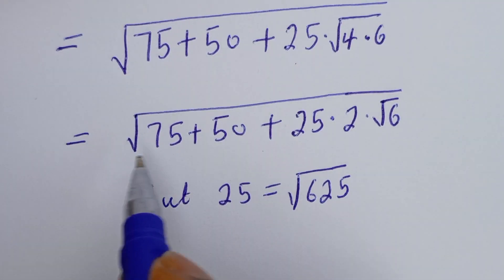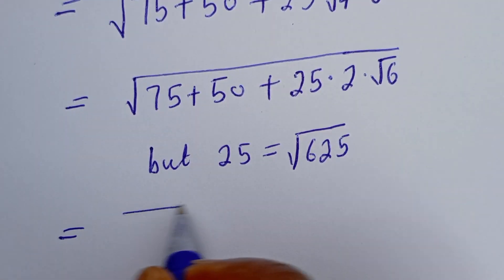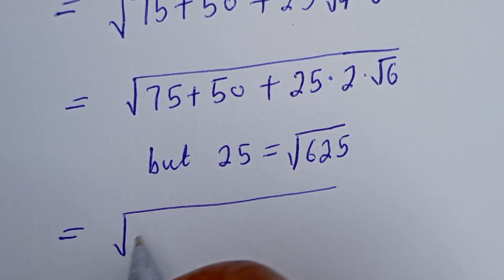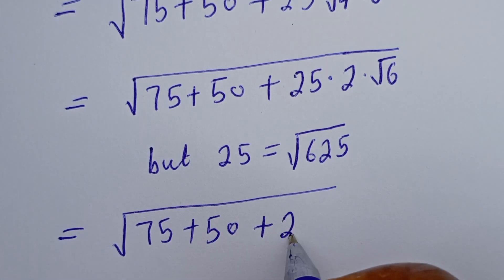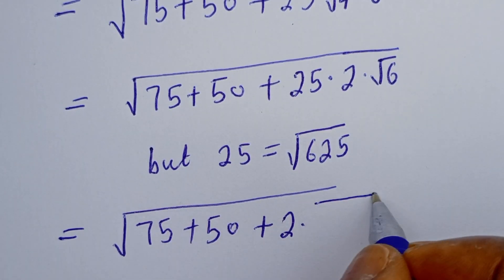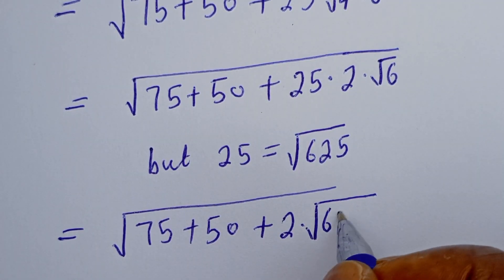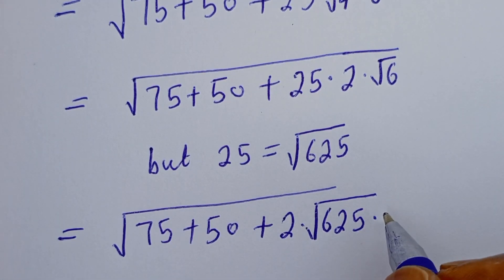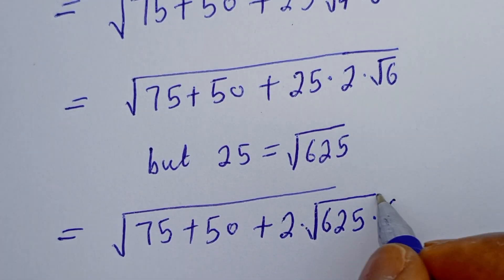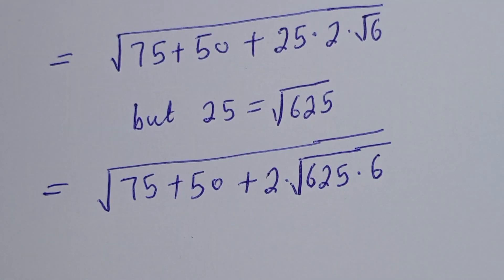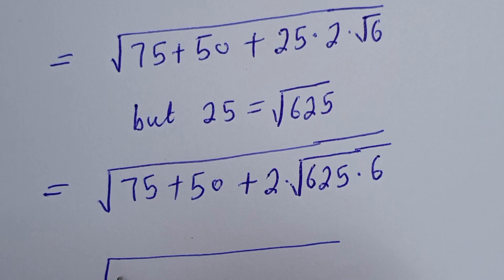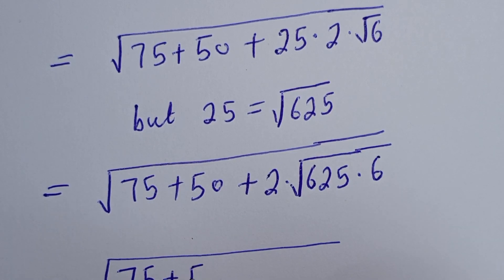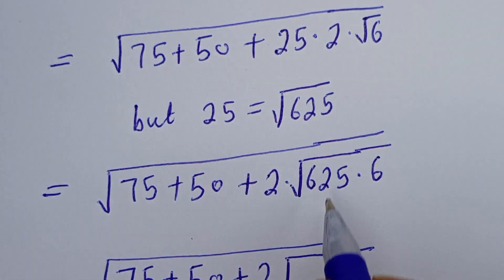But 25 is equal to square root of 625. Then the whole expression can be written as square root of 75 plus 50 plus 2 multiplied by square root of 6, which is equal to square root of 75 plus 50 plus 2 square root of 625 times 6.